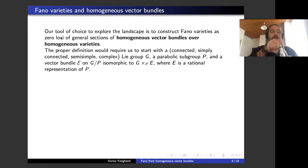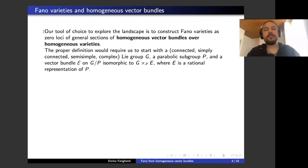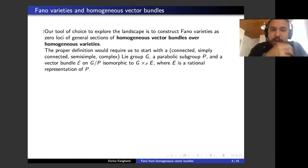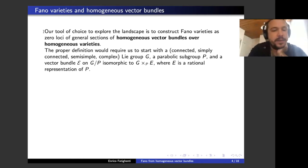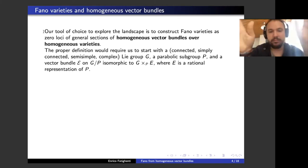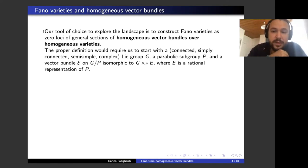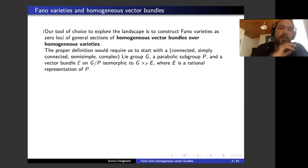So why is there a 'homogeneous vector bundle' part in the title? We want to explore the landscape by constructing Fano varieties as zero loci of general sections of homogeneous vector bundles over homogeneous varieties. The proper definition requires starting with a Lie group G that is connected, simply connected, semi-simple, and complex, with a parabolic subgroup P, and a vector bundle on G/P isomorphic to a twisted representation of E, where E is a rational representation of P.